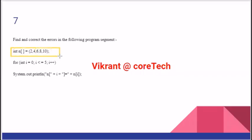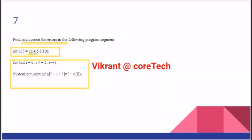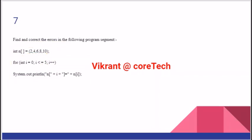This is an array and we are trying to print the value of the array. You have to find the error, if there is any. The error is that we should have a curly bracket instead of a square bracket, and the next popular error is that the equal to sign is to be ignored in this case.